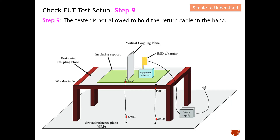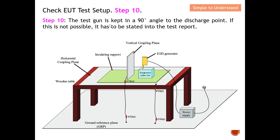Step number ten: the test gun must be kept at a 90-degree angle to the discharge point. If this is not possible, it must be stated in the test report. These are all 10 steps to ensure your ESD test setup is fully compliant with the standard.